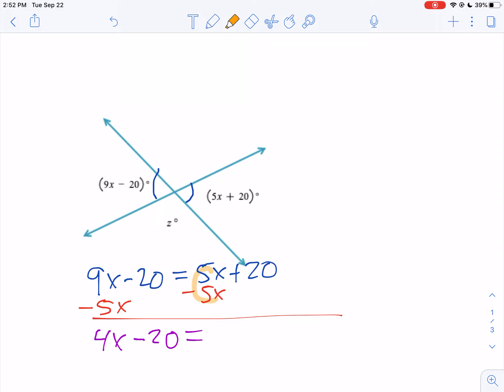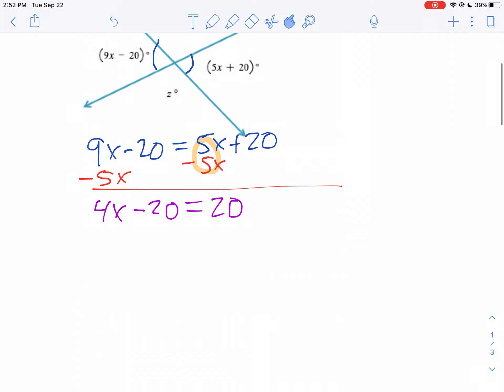5X minus 5X makes zero equals positive 20. Now the opposite of subtracting 20, we're going to add 20 to both sides. So we get 4X. Negative 20 plus 20 is zero equals 40. Divide both sides by 4. X equals 10.